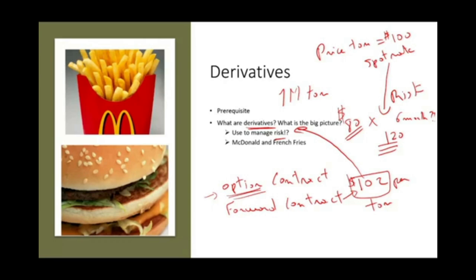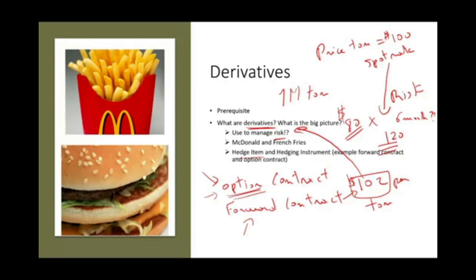Once they buy this contract — once they buy the option contract or the forward contract — we have to understand two new terms: what's a hedge item and what's a hedging instrument. The contract itself is a hedging instrument. And what are they hedging? They are hedging the potatoes. Since this chapter is dealing with foreign currency, let's talk about a more realistic example that can help us understand this.